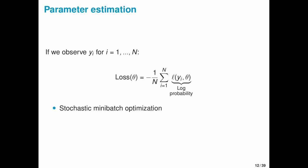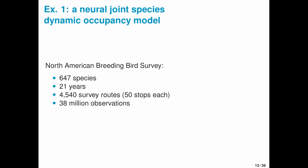As a first example, I'll describe a neural joint species dynamic occupancy model using data from the North American Breeding Bird Survey. This includes 647 species over 21 years, and in total it's around 38 million observations.